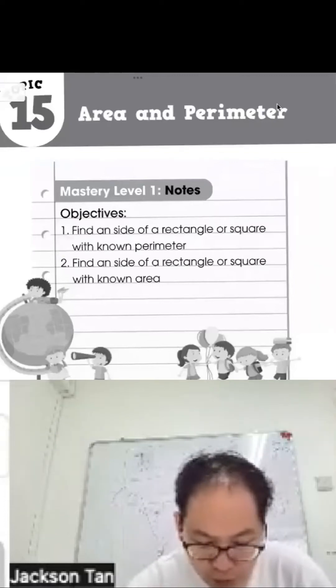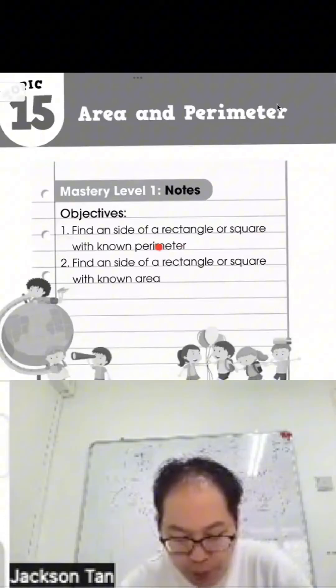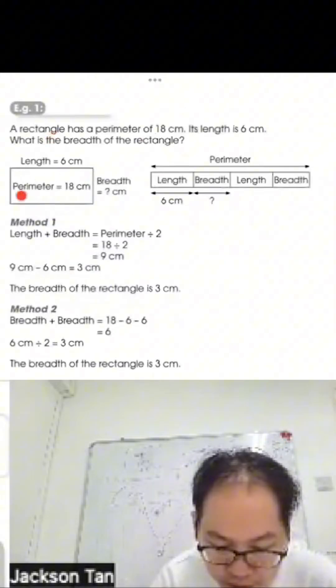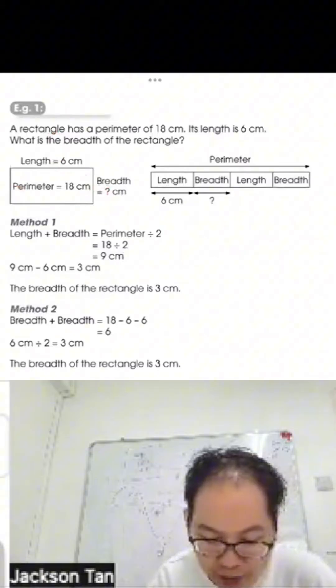Welcome to Mastery Level 1: Perimeter. A rectangle has a perimeter of 18 cm and its length is 6 cm. What is the breadth of the rectangle? We can express this as: length plus length plus breadth plus breadth equals perimeter.